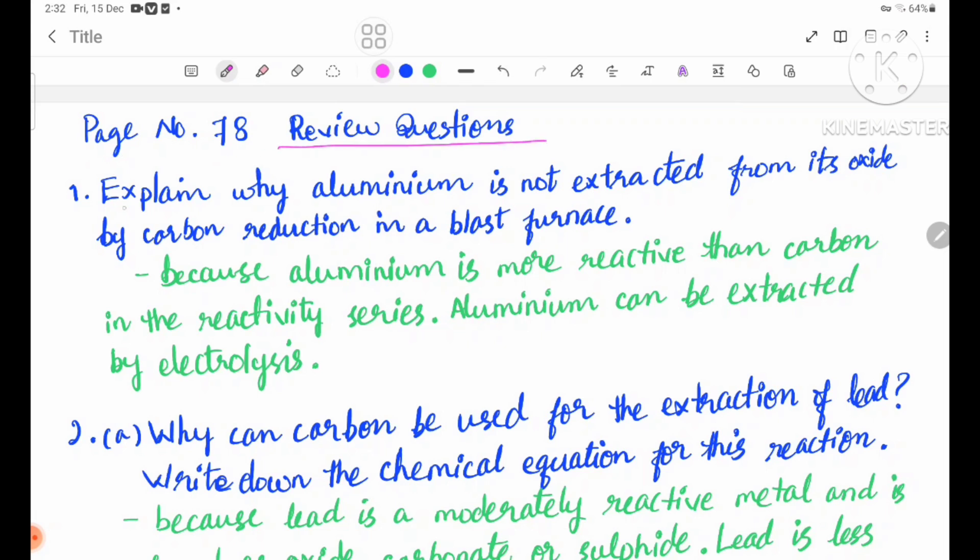Review question number one: Explain why aluminum is not extracted from its oxide by carbon reduction in a blast furnace. Aluminum is not extracted from its oxide by carbon reduction in a blast furnace because aluminum is more reactive than carbon in the reactivity series.